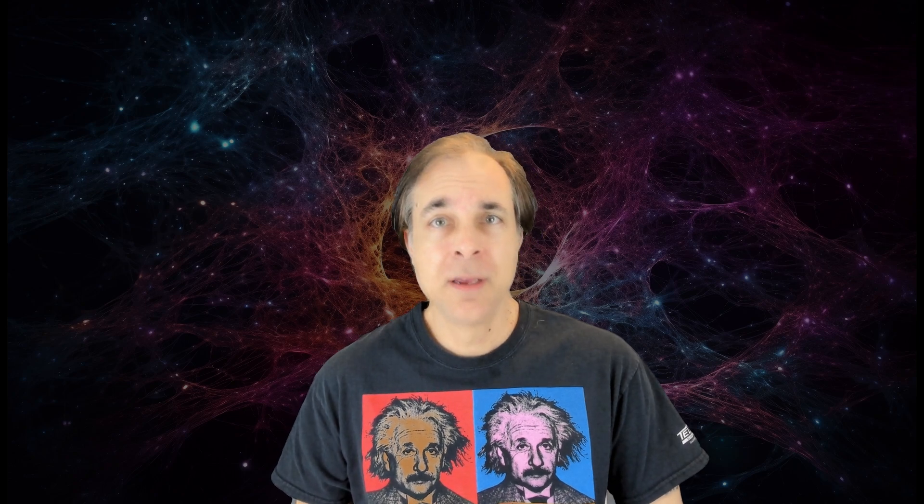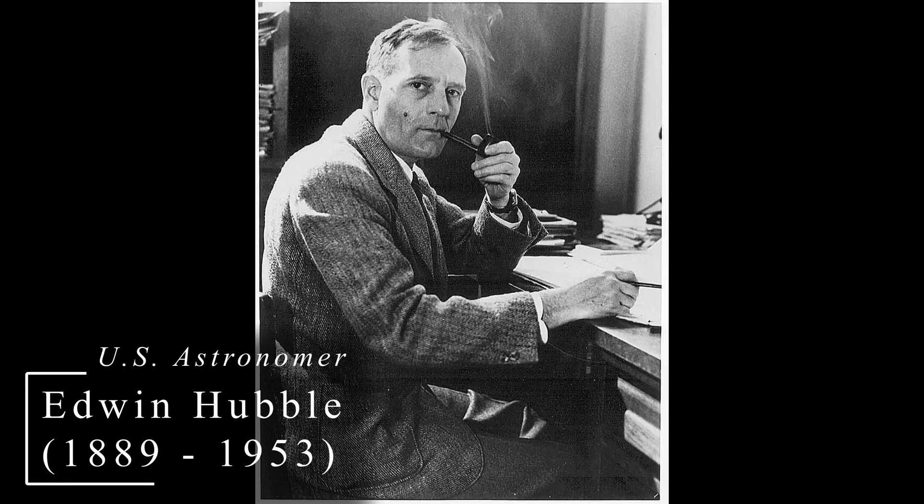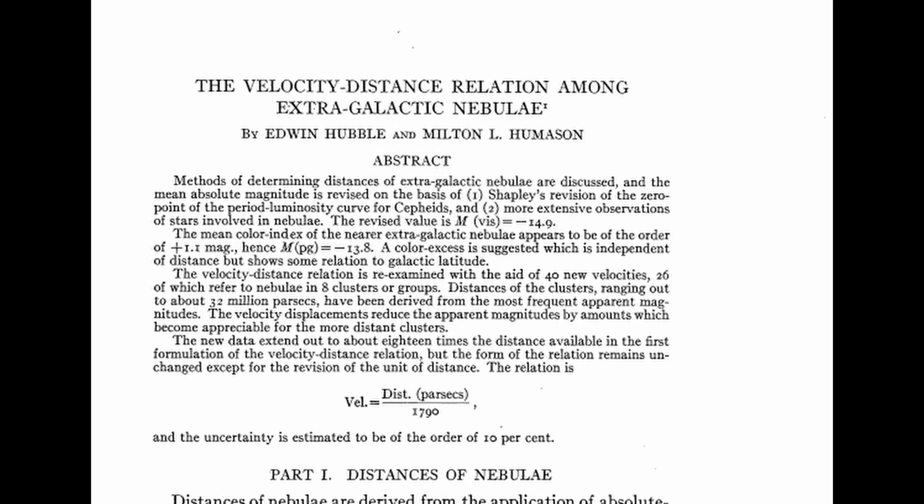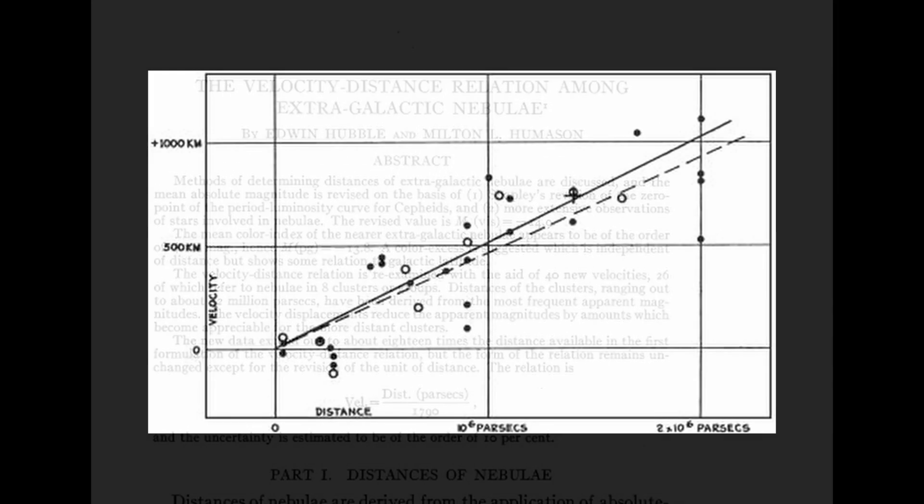This view was dramatically overturned in 1929 when Edwin Hubble published his findings that the universe was instead expanding. Hubble's surprising and revolutionary data came from observing galaxies at varying distances from us and their relative speeds. He found that the farther a galaxy was from us, the faster it was moving away from us, not toward, but away from us, and this relationship was linear. This was direct evidence that we lived in an expanding universe.